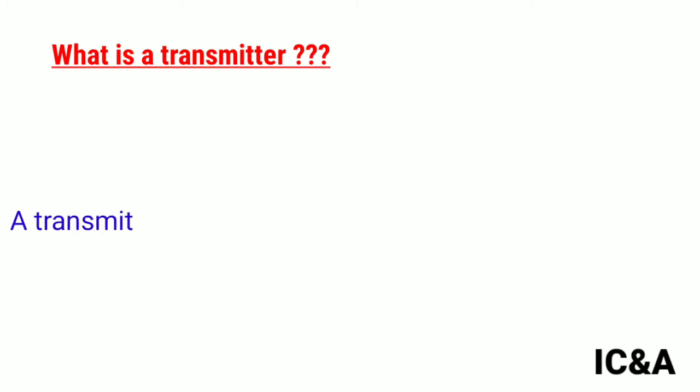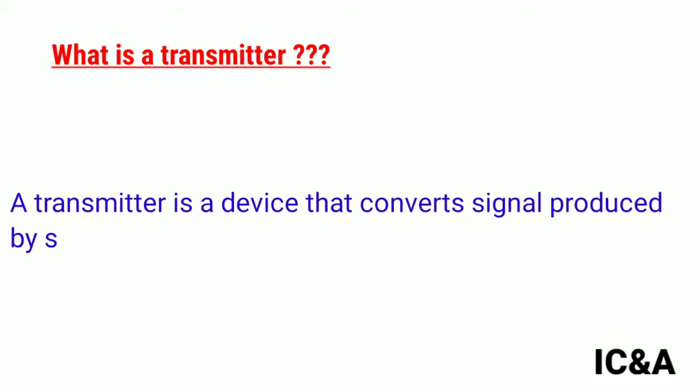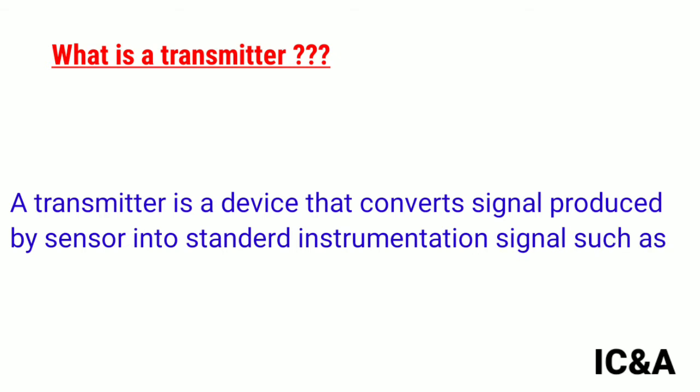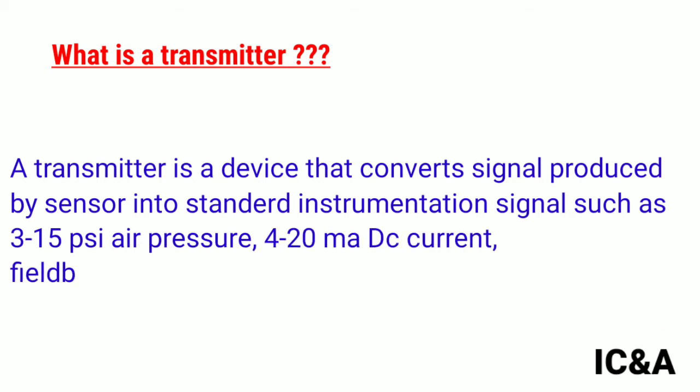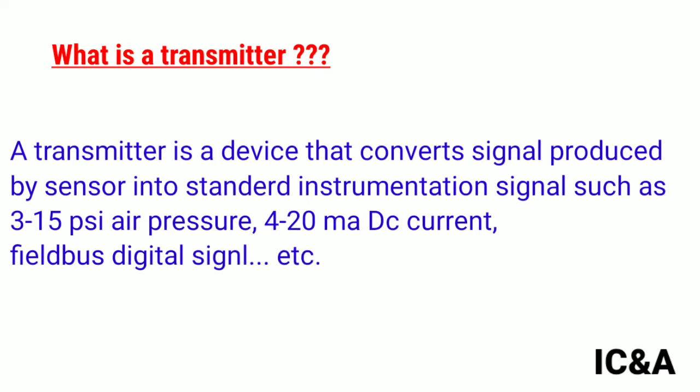Transmitter. What is a transmitter? A transmitter is a device that converts signals produced by a sensor into standard instrumentation signals such as 3-15 psi air pressure or 4-20 mA DC current or field bus digital signals.